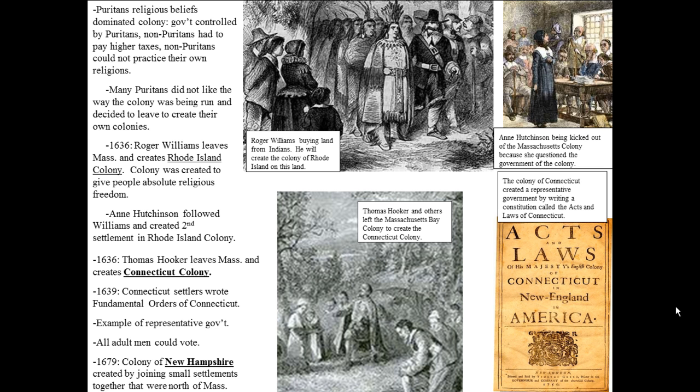During Roger Williams' time, there was a square in the capital where a Jewish synagogue stood on one corner, a Presbyterian church on another corner, and a Puritan church on another corner. These religions all existed together in Rhode Island, which would never have happened in the Puritan colony of Massachusetts Bay.